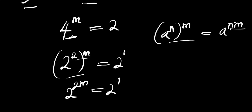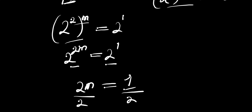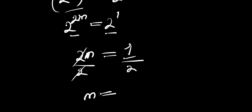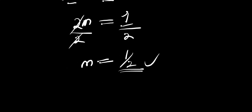Going by the same identity again — if the bases are the same, you compare the exponents — that means 2m equals 1. So we divide both sides by 2, and 2 cancels, giving us m equals 1 over 2. Now let's go ahead and check that this is the correct answer.